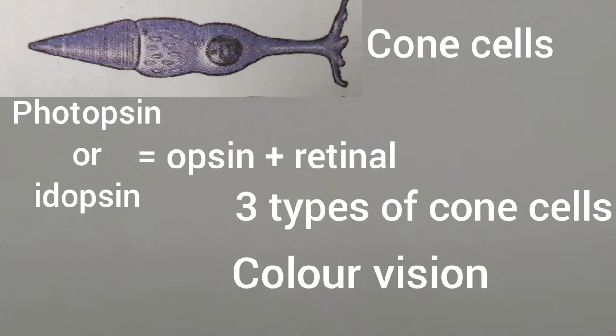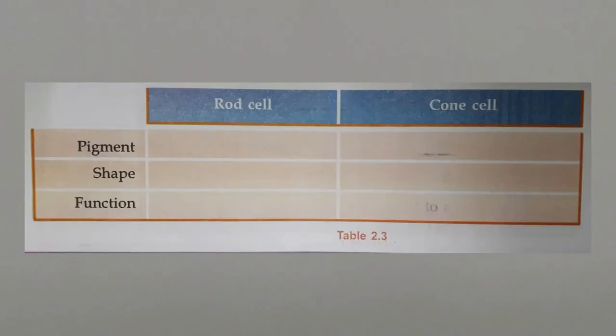Take your textbook page number 26, table 2.3. Retina and the photoreceptors is the topic. In the table we will explain the details. See you.